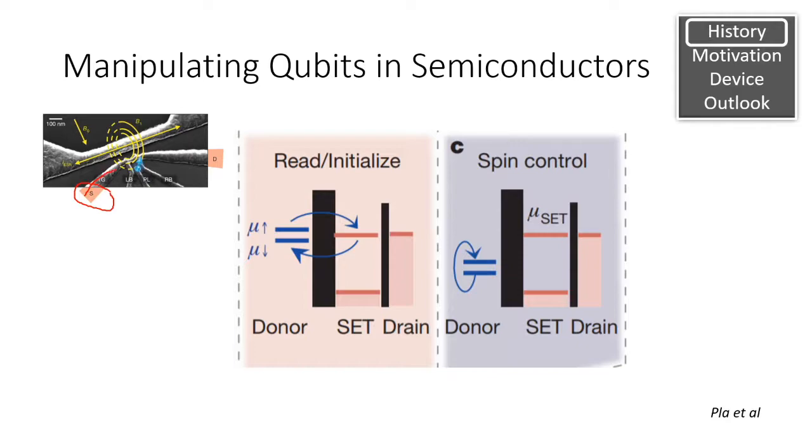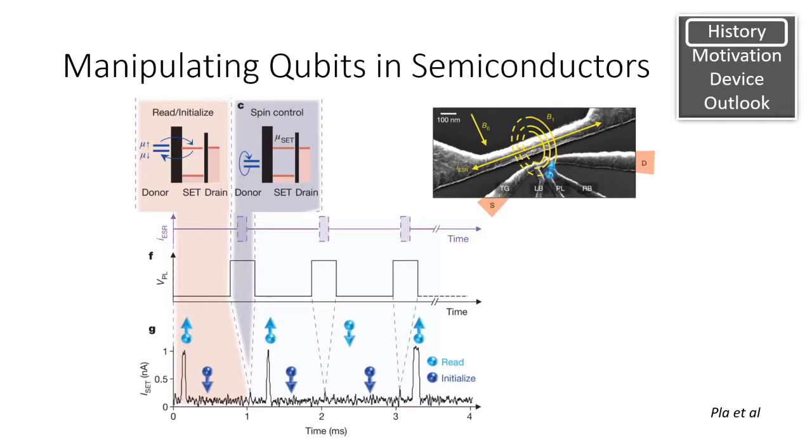As the device is running, current originates from the source. Any time a spin on an electron encounters the energy well, it tunnels into this donor. Then the electron is plunged into a deeper energy well, and the magnetic field is able to manipulate the spin, which gives the electron spin a new orientation.